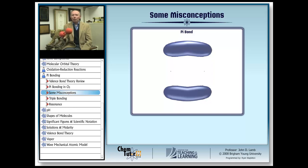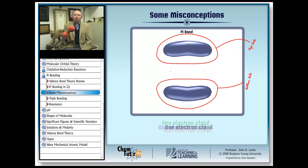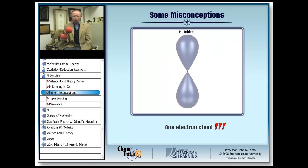But don't be fooled by the fact that the electron cloud has two lobes. This is one electron cloud, just as an atomic p orbital that looks like this with two lobes is one electron cloud. In the pi bond, there are two electrons in this cloud, just as there are up to two electrons in a p-type atomic orbital.